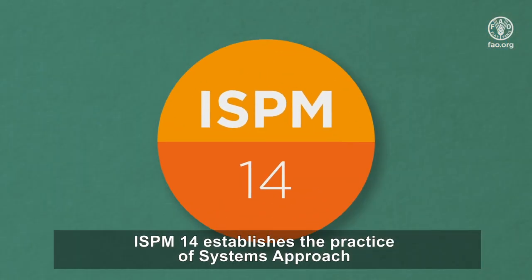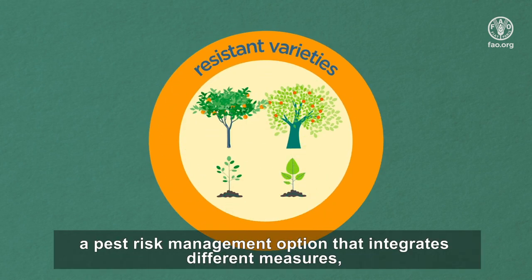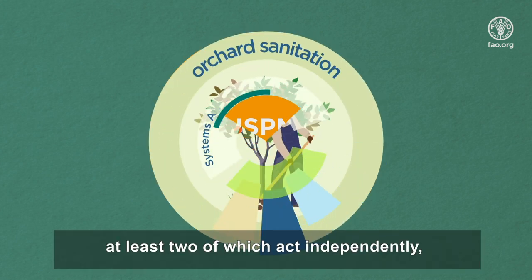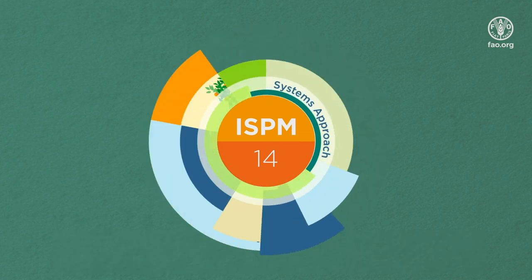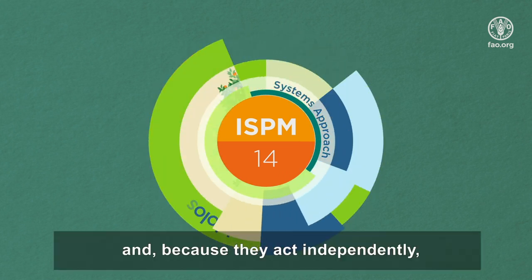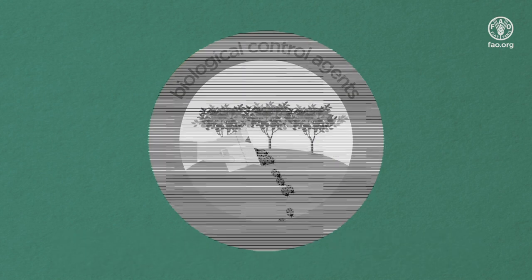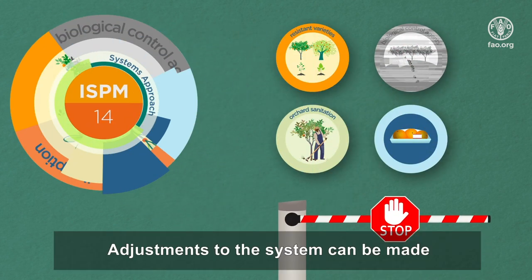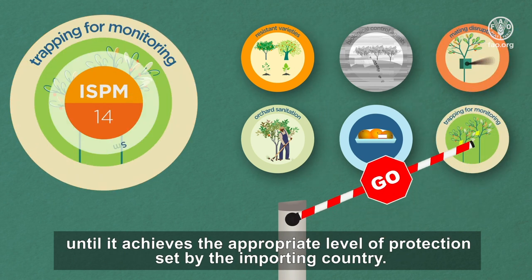ISPM 14 establishes the practice of systems approach, a pest risk management option that integrates different measures, at least two of which act independently with cumulative effect. Each of these measures reinforces the effectiveness of the system, and because they act independently, if one fails, the system can continue. Adjustments to the system can be made until it achieves the appropriate level of protection set by the importing country.